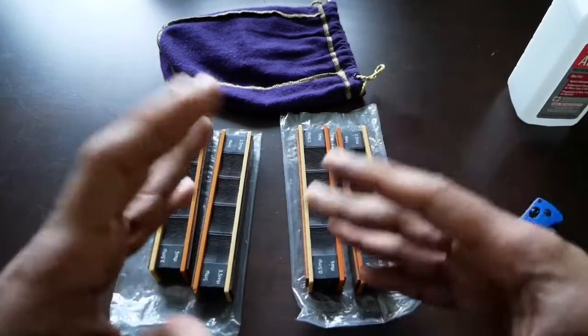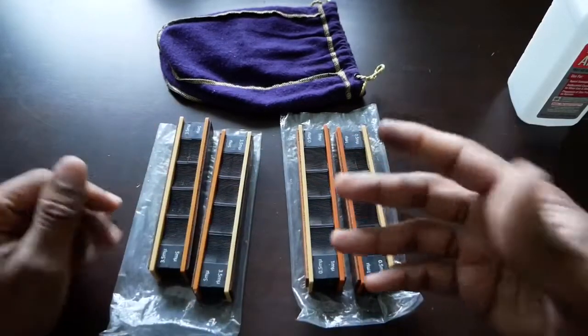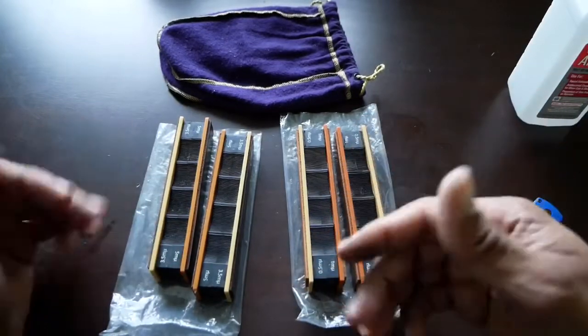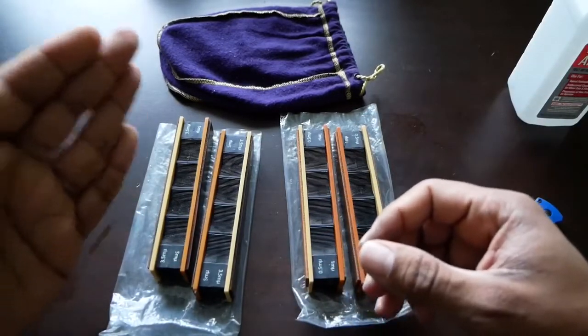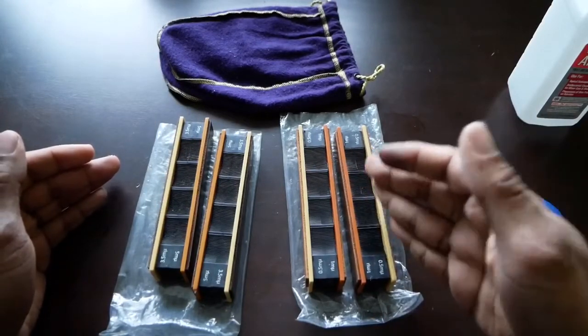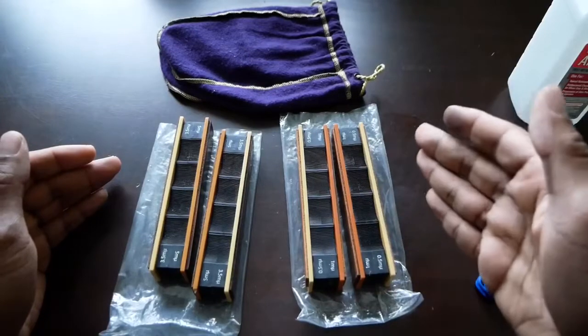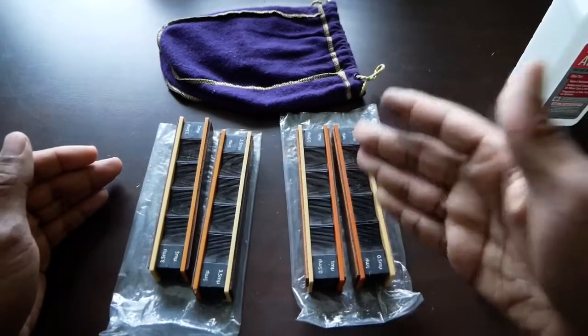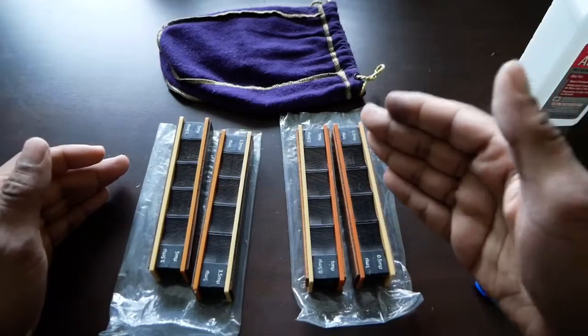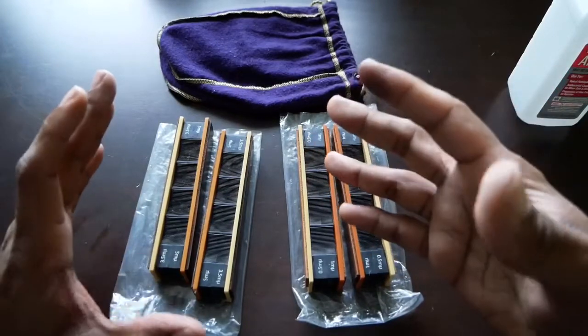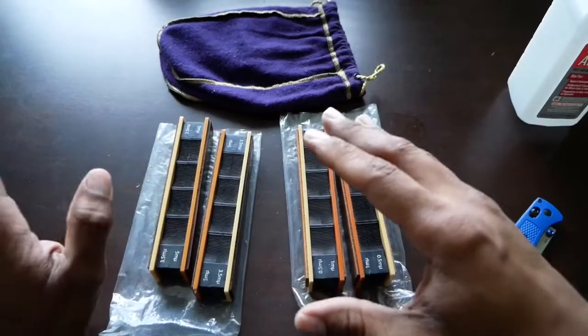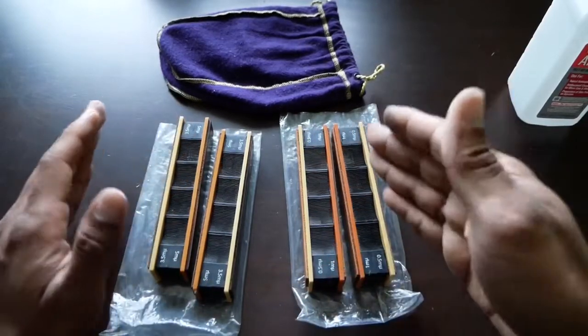A lot of people bring up that conversation whenever I post one of these videos. If you're one of those people concerned about cross-contamination, I would start with your most fine grit compound, that side of the strop, and work your way up. That way, the only thing that's going to happen, if anything, is your coarser compounds are going to become a little bit more fine.